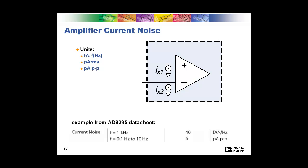The other component of amplifier voltage noise is current noise. And you can see some units, how that's typically specced, femtoamps per root hertz, picoamps RMS, picoamps peak-to-peak. And you can model this as a current source at each of the inputs. And you see here an example from my AD295 data sheet, how it's typically specified in the data sheet.